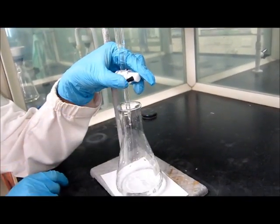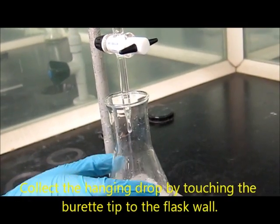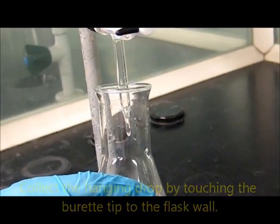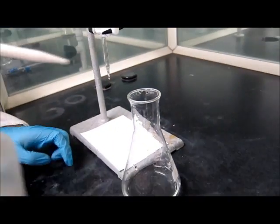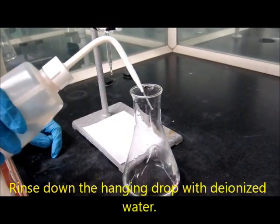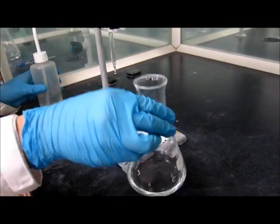Now, collect the hang drop by touching the burette tip to the flask wall. It's in! Rinse down the hang drop with deionized water. Flush it down and swirl the conical flask as you do it.